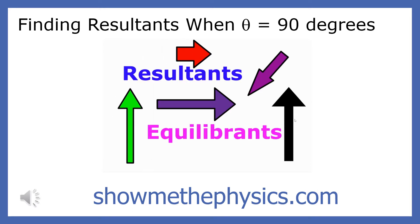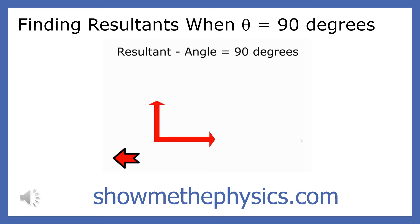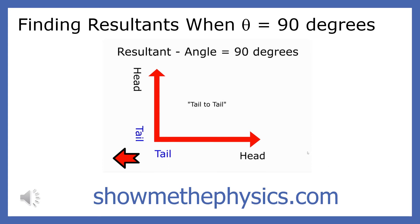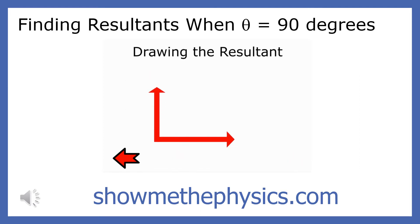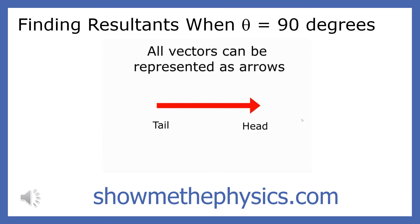In this lesson you will learn how to find the resultant when the angle equals 90 degrees. The method you will learn about only applies to forces that are connected tail to tail. The side of a force vector that has the arrow is called the head and the other side is called the tail. When vectors are connected tail to tail, both forces are pulling forces.